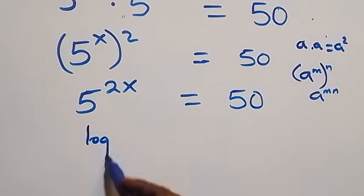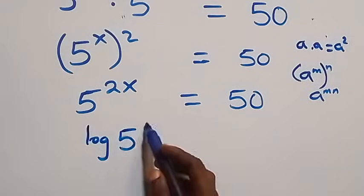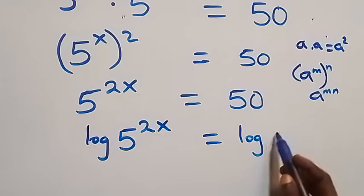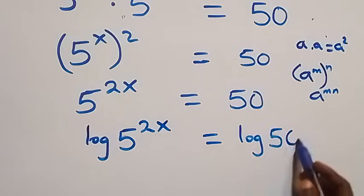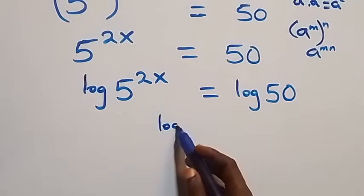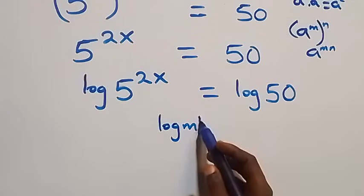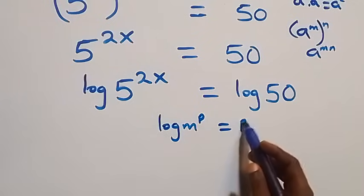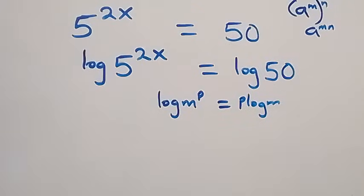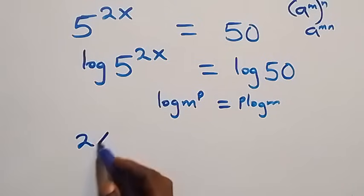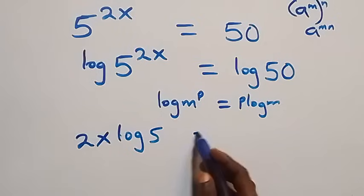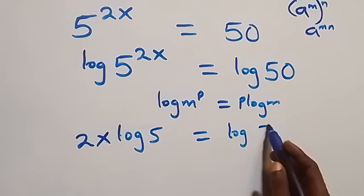The next step: we take the log on both sides, giving log of 5 raised to power 2x equals log 50. Then we apply the power rule of logarithms, where log m raised to power p equals p·log m. The power here is 2x, so this becomes 2x·log 5 equals log 50.